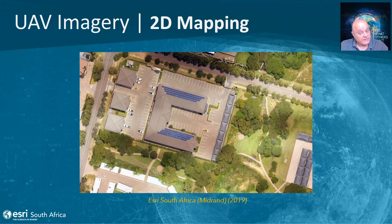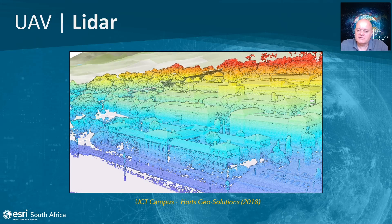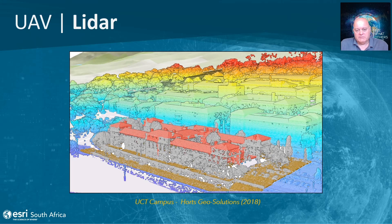The 2D products we can derive are an orthophoto — showing the building from nadir, including photovoltaic cells on the roof — and a digital surface model used to measure heights. Drones are not limited to cameras; here we look at a LiDAR survey of the University of Cape Town campus, where a drone flight by Ports Geo Solutions had a LiDAR system mounted on the drone. You can see the point cloud colored by height above ground, with classification of ground versus buildings versus vegetation.